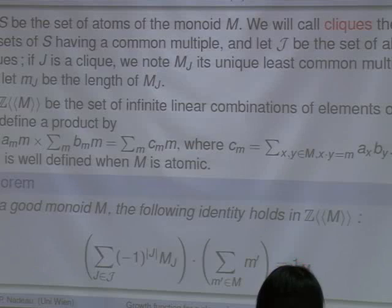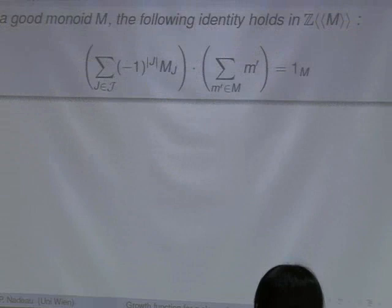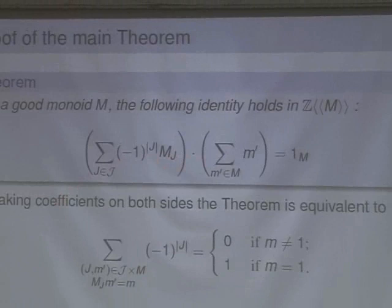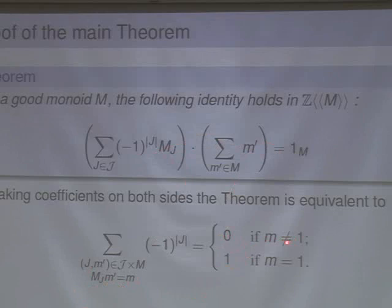We will mostly use this for monoids with an additional property called homogeneousness. To prove this, you just look at the coefficients on both sides for any given element M. It's the sum of minus 1 to the size of J over all pairs J, M′ such that MJ · M′ equals M. This equals 0 if M is different from the identity, and 1 if M equals the identity, because the identity has coefficient 1 and all other elements of the monoid have coefficient 0.